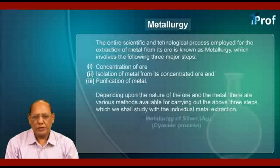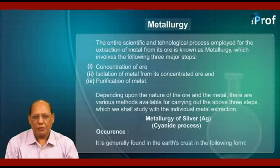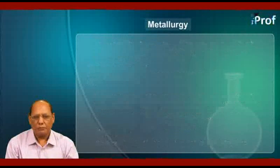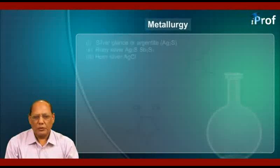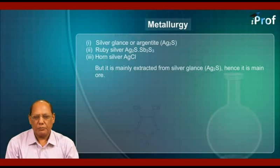Let us begin with metallurgy of silver — the Cyanide Process. Occurrence: silver is generally found in the earth's crust in the following forms: Number 1, silver glance or argentite (Ag2S). Number 2, ruby silver (Ag2S·Sb2S3). Number 3, horn silver (AgCl). But it is mainly extracted from silver glance (Ag2S), hence that is its main ore.